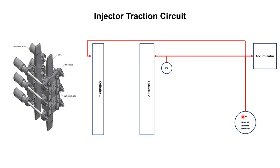This circuit starts from the quick disconnect. From the quick disconnect, the hose goes to the accumulator. At the accumulator, the flow is divided into two parts. One hose goes to one cylinder and the other hose goes to the other opposite cylinder of the same level — that is, if one hose goes to the top cylinder, then the other hose goes to the top cylinder on the other side. In this way, the hydraulic circuit works.